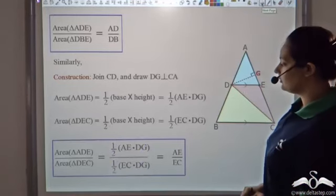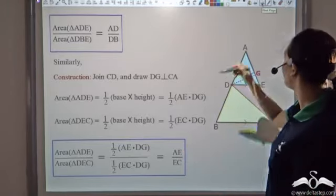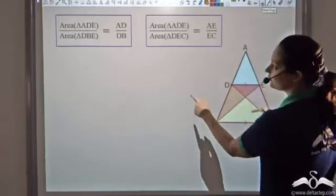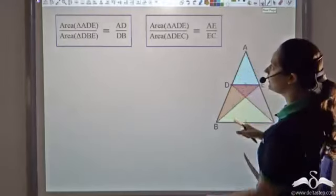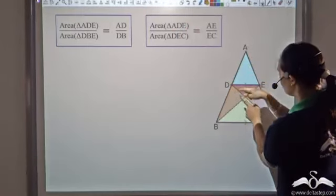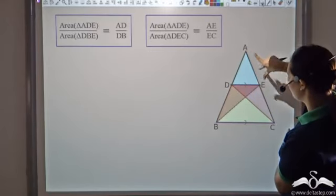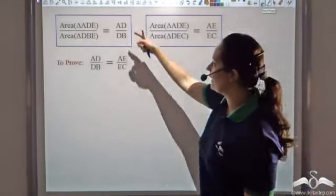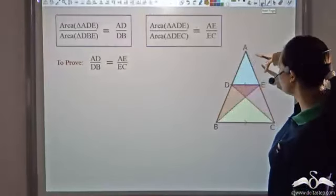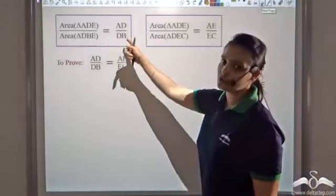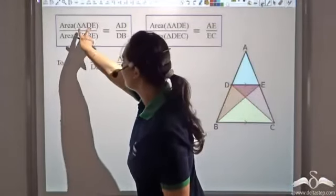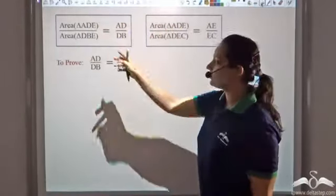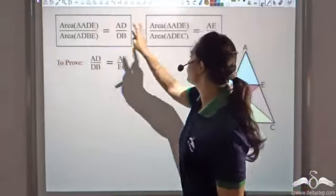So now we have: area of triangle ADE to triangle DBE equals AD by DB, and area of triangle ADE to triangle DEC equals AE by EC. We want to prove AD by DB equals AE by EC. In these two expressions, triangle ADE appears in both numerators. All I need to do is prove that the areas of triangles DBE and DEC are the same.